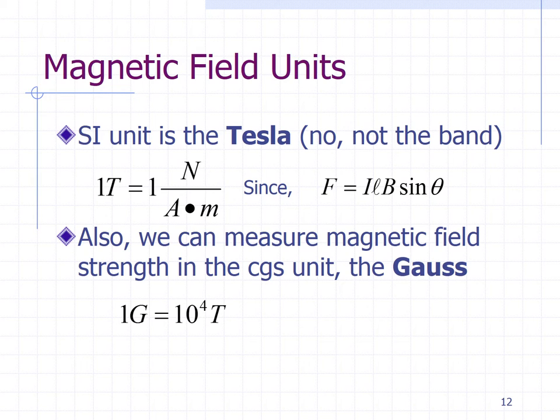We'll see that magnetic field has units of newtons per amp meter. We could also measure magnetic field in units of Gauss, which is smaller. Tesla's are smaller than Gauss. So Gauss is 10 to the 4 Tesla. But for the most part, we're going to be using the standard unit of Tesla.